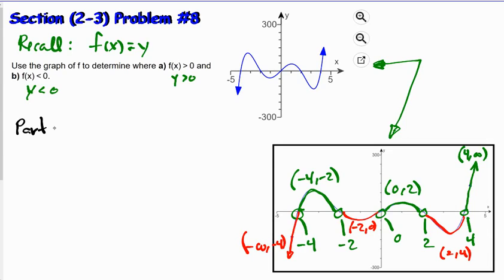So for part a, we can say that f(x) is greater than 0 for x such that x is in the interval negative 4 to negative 2, unioned with 0 to 2, unioned with 4 to positive infinity.